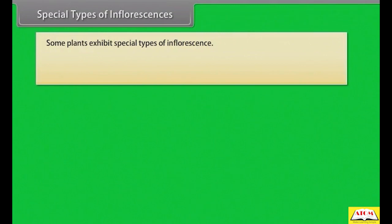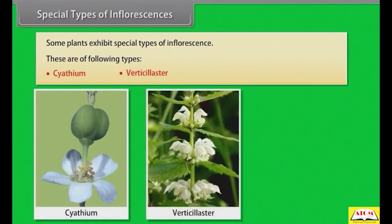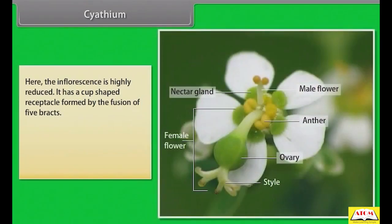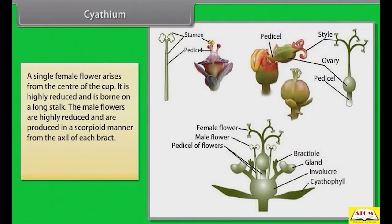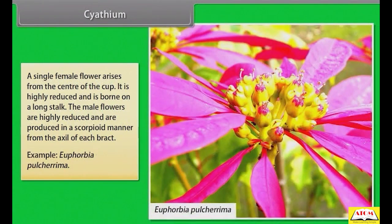Some plants exhibit special types of inflorescence: Cyathium, Verticillaster, and Hypanthodium. In Cyathium, the inflorescence is highly reduced. It has a cup-shaped receptacle formed by the fusion of five bracts. On the surface of this cup, generally a yellow-colored nectar-secreting gland is present. A single female flower arises from the center of the cup — it is highly reduced and is borne on a long stalk. The male flowers are highly reduced and are produced in scorpioid manner from the axil of each bract. Example: Euphorbia pulcherrima.